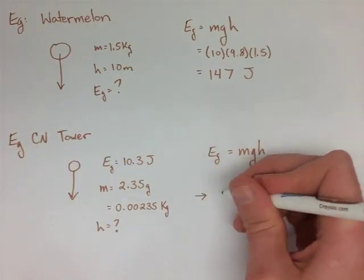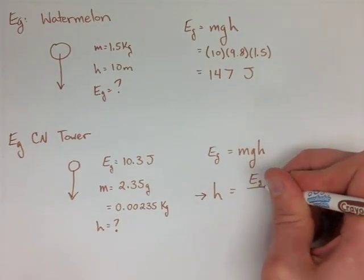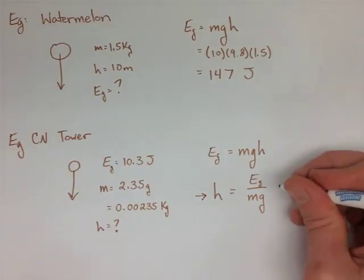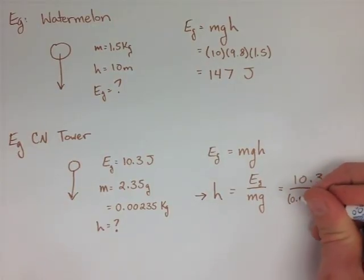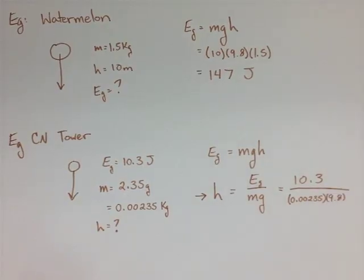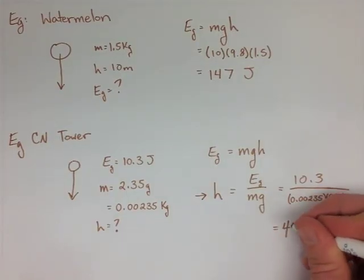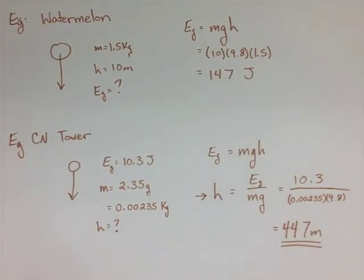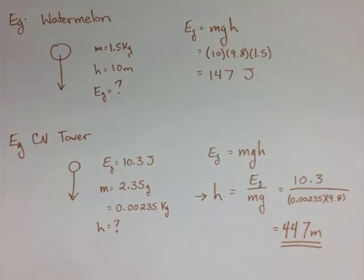We use our gravitational potential energy formula and rearrange for h, sub in our values, and solve. We find that the CN tower is 447 meters high, which is the actual height of the CN tower, at the highest observation deck.